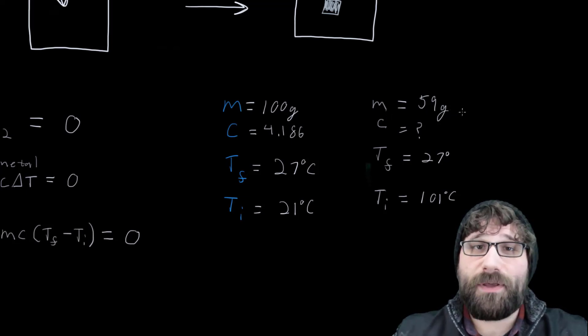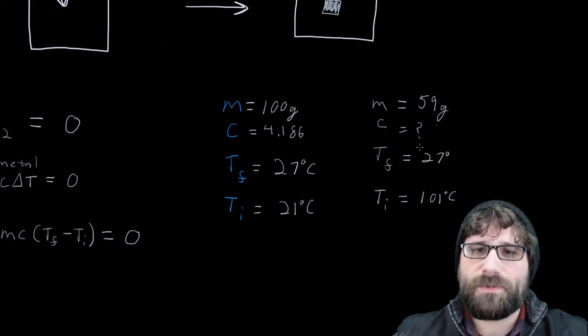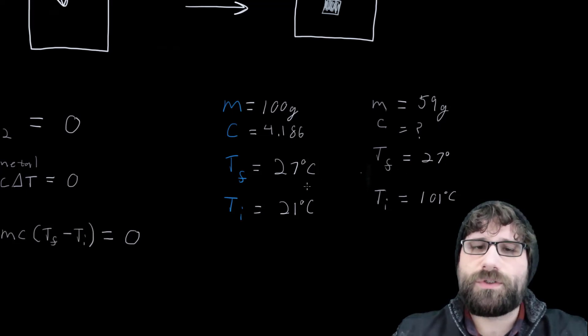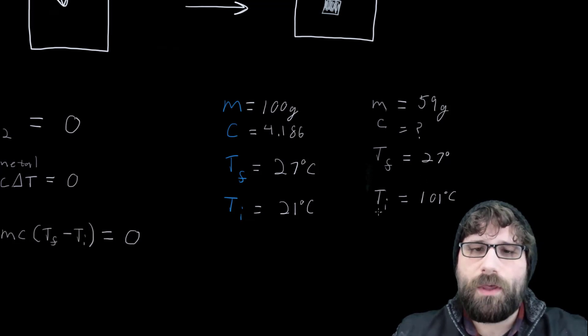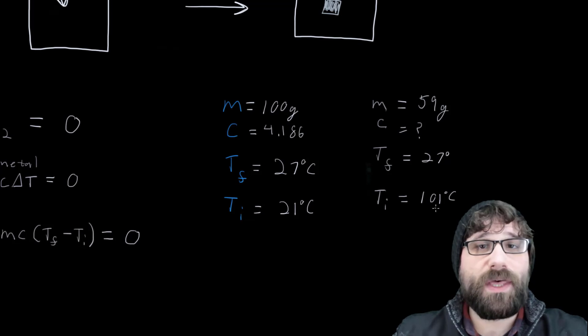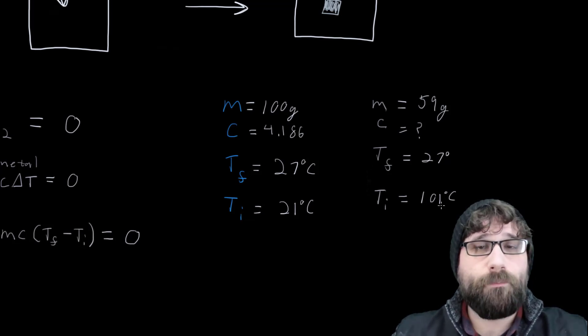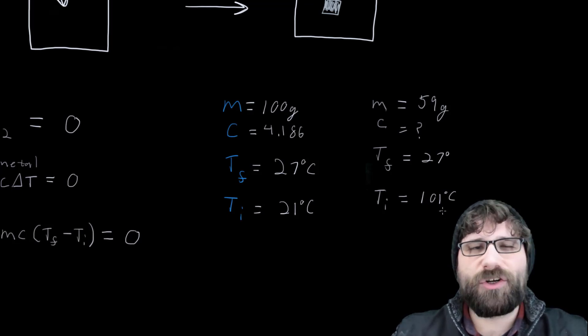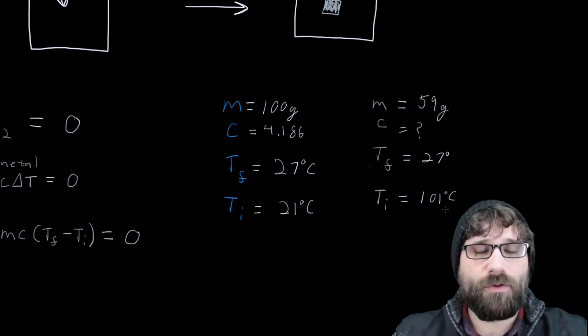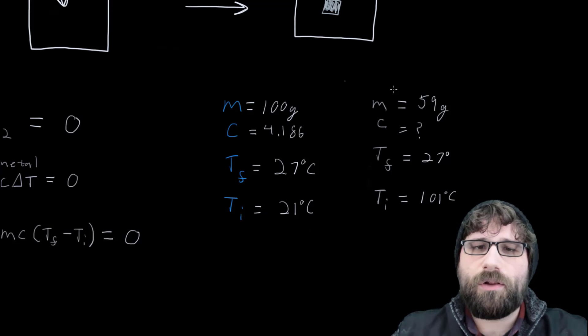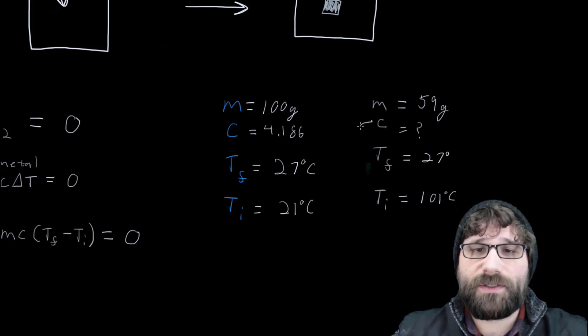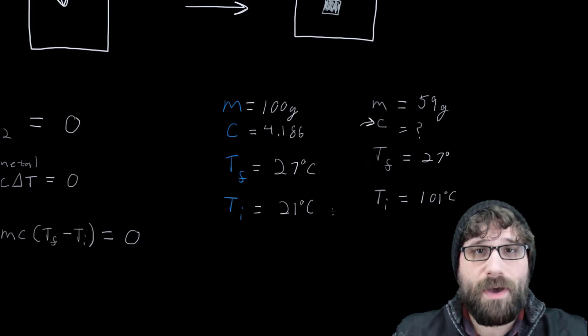My mass of that piece of metal was 59 grams. My final temperature was just like the water, they should be at the same final temperature, because they're a thermal equilibrium mixture. And then my initial temperature was that temperature of the boiling water, because I left it in there for long enough to reach that boiling temperature. So that was 101 degrees Celsius by my thermometer. So now I'm going to take all of these values, plug them in, and solve for that specific heat for that metal.